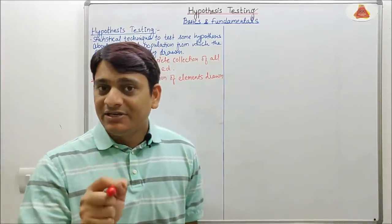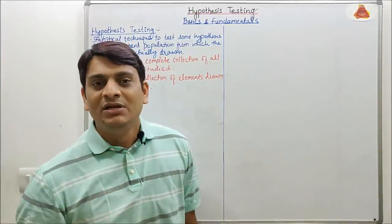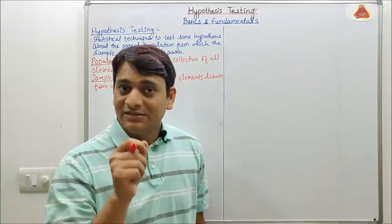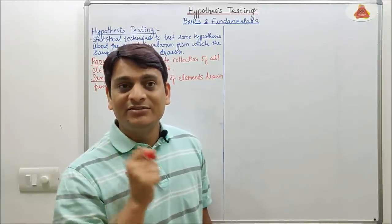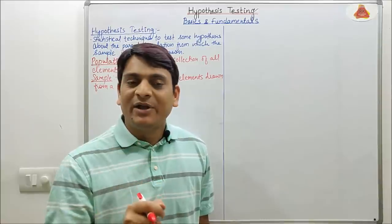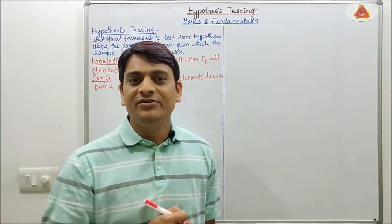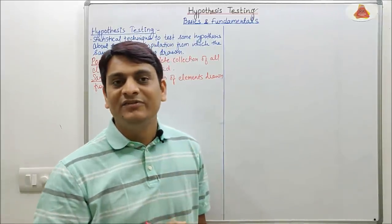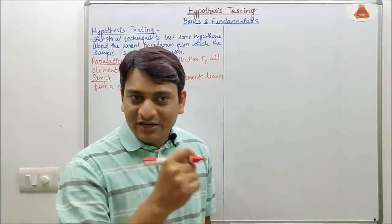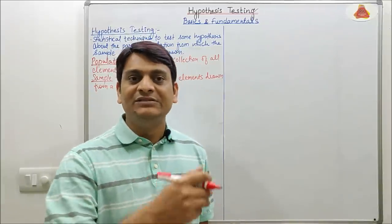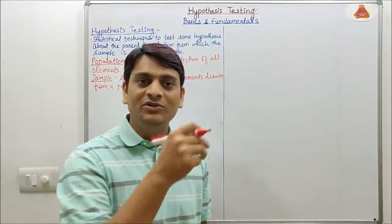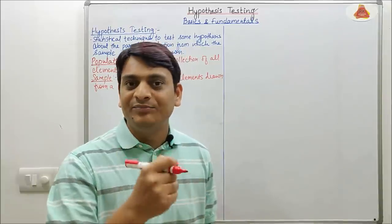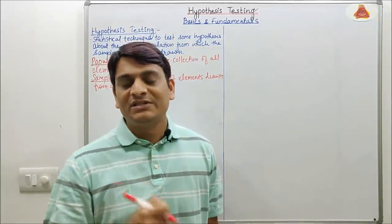This is a simplified definition of population and sample. For better understanding, here I am taking one example. For example, one class which is B from first year contains 100 students and we are determining how many students are watching YouTube videos. If we run that estimation on all 100 students, then all 100 students will be considered as population. If we run it on 50 or 20 students out of those 100, then those 50 or 20 students will be considered as sample for that class B from first year.